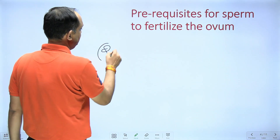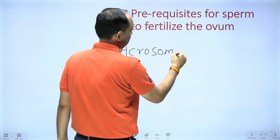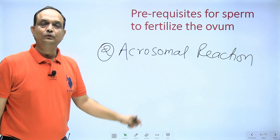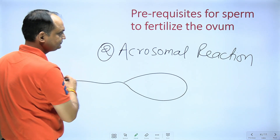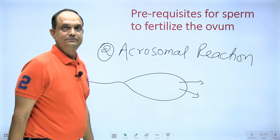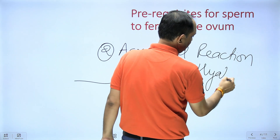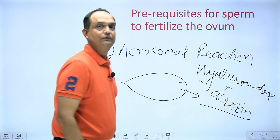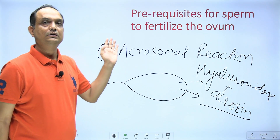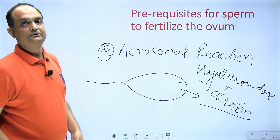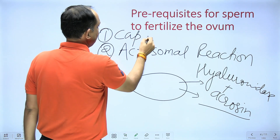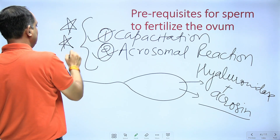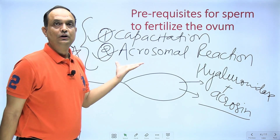The second prerequisite is known as the acrosomal reaction. The acrosomal reaction means that the head of the sperm starts to release enzymes — specifically hyaluronidase and acrosin. These enzymes are released from the head of the sperm once it contacts the secondary oocyte. Both capacitation and the acrosomal reaction are compulsory prerequisites for the spermatozoa to penetrate the different barriers of the secondary oocyte and fertilize it.